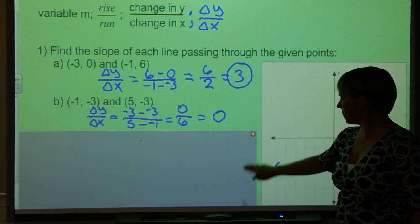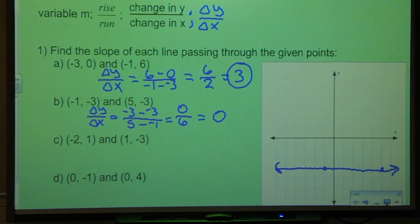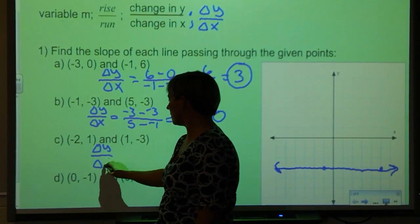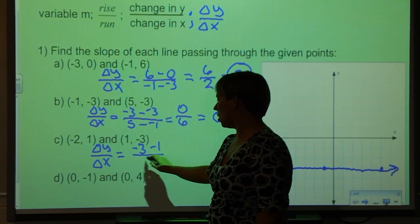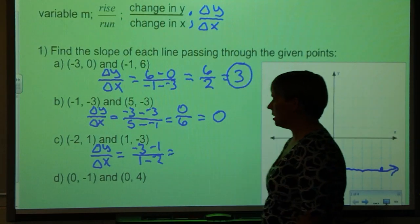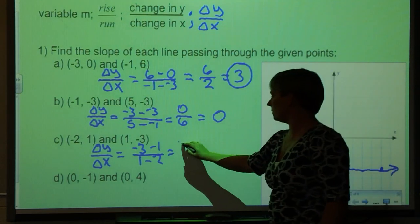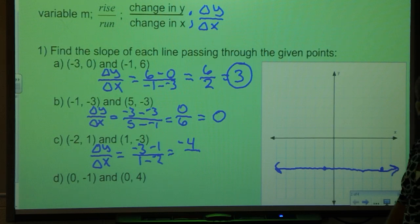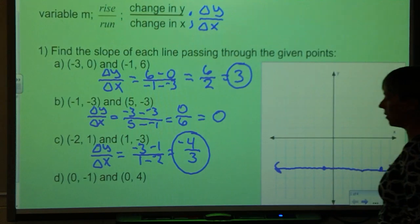Another example would be to look at the points (-2, 1) and (1, -3). I can find my change in y over change in x which would give me -3 minus 1 over 1 minus -2. So -3 minus 1 would give me -4. And 1 minus -2 would give me 1 plus 2, which is 3. So my slope is -4/3.